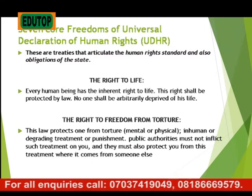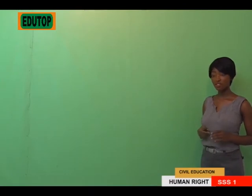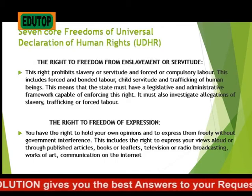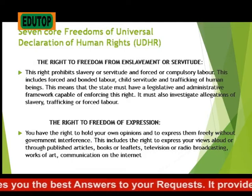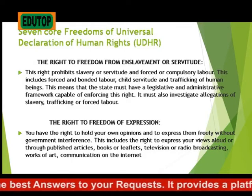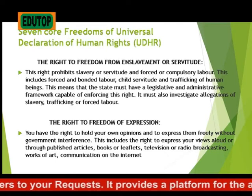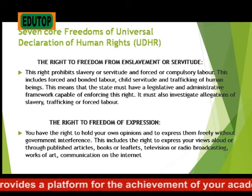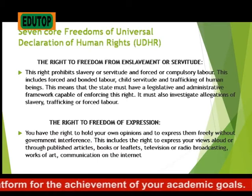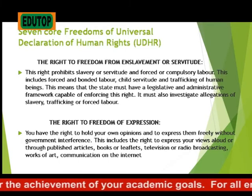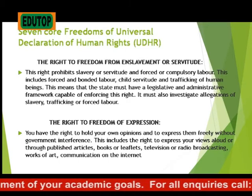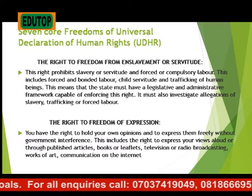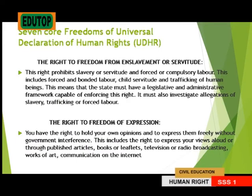Number 3: The right to freedom from enslavement or servitude. This right prohibits slavery or servitude, and forced or compulsory labour. This includes forced and bonded labour, child servitude, and trafficking of human beings. The state must have a legislative and administrative framework capable of enforcing its rights, and must also investigate allegations of slavery, trafficking or forced labour.